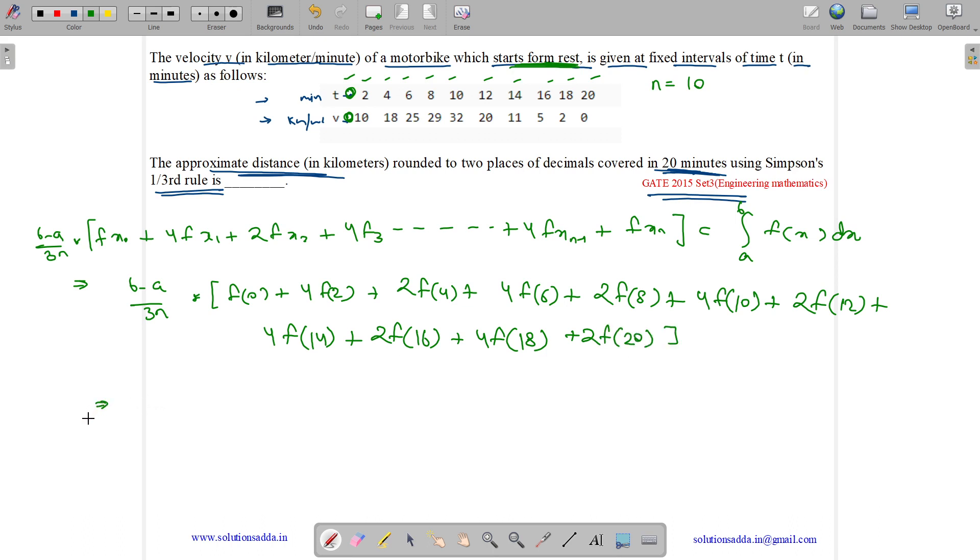So if we compute this, we will get this value to be equal to 2 by 3. So b is 20, a is 0, 3n is 30, so it equals 2 by 3. So we get 2 by 3 into f of 0 is 0, plus 4 times f2 is 10, plus 2 times f4 is 18, plus 4 times f6 is 25, plus 2 times f8 is 29, plus 4 times f10 is 32, plus 2 times f12 is 20, plus 4 times f14 is 11, plus 2 times f16 is 5, plus 4 times f18 is 2, plus 2 times f20 is 0.